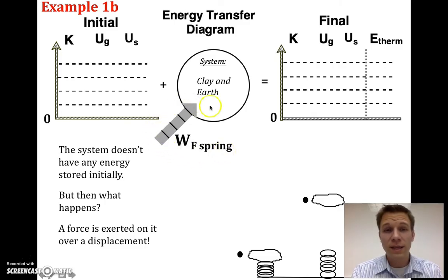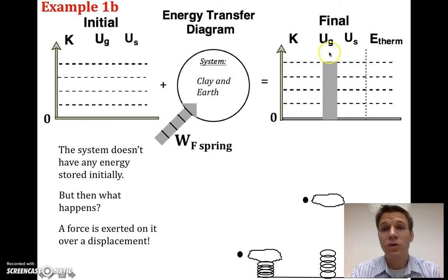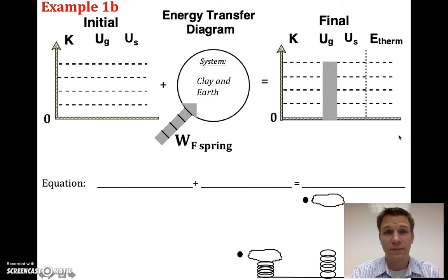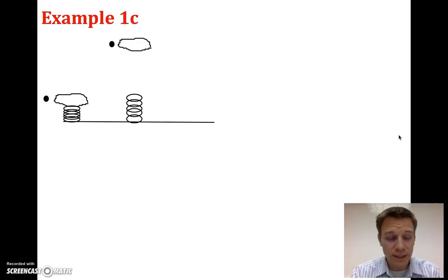Zero energy initially, plus four units of energy in from the spring's force, means we must have four units at the end — all stored gravitationally, since no energy is going out. Our equation is: zero plus W by the force of the spring equals UG at the end.